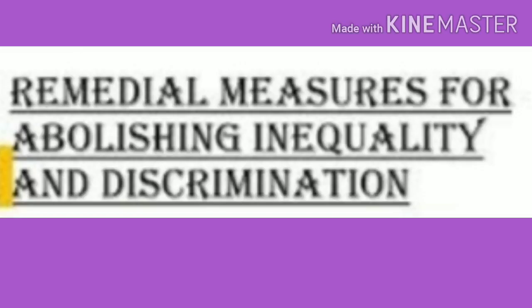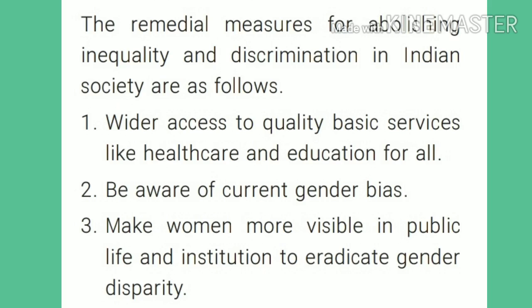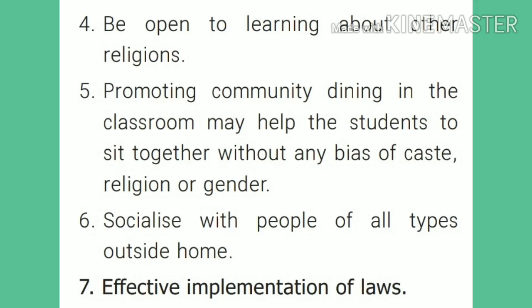Fifth one is the remedial measures for abolishing inequality and discrimination in India. Remedial measures include: wider access to quality basic services like health care and education for all; be aware of current gender bias and make women more visible in public life and institutions to eradicate gender disparity; be open to learning about other religions; promoting community dining in the classroom may help students sit together without any bias of caste, religion or gender; socialize with people of all types outside home; and effective implementation of laws.